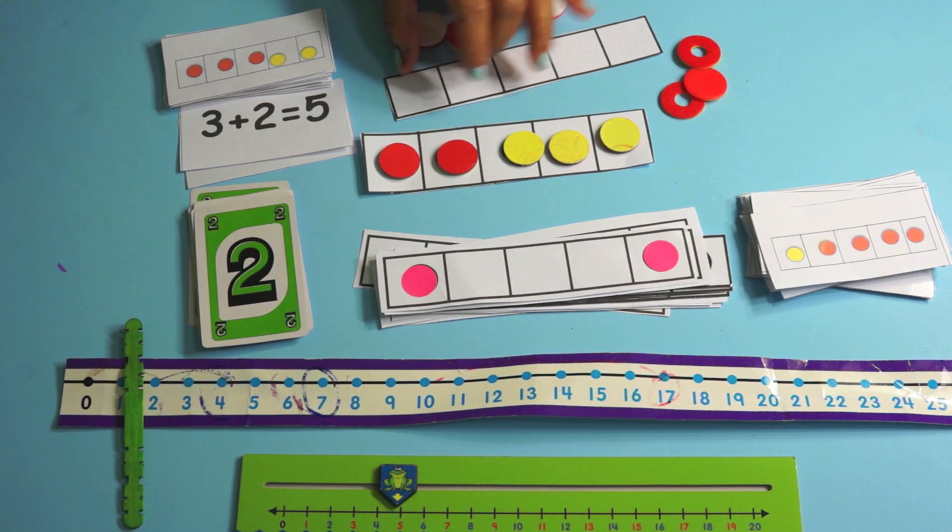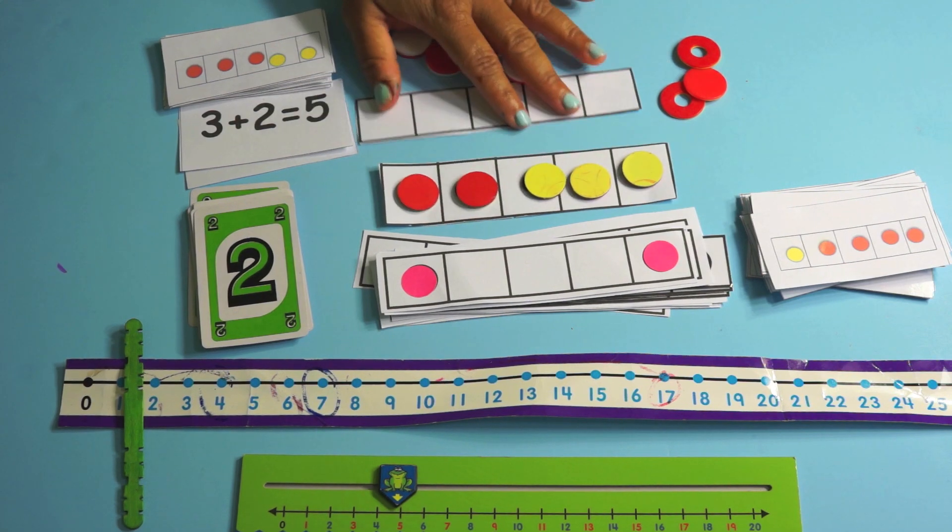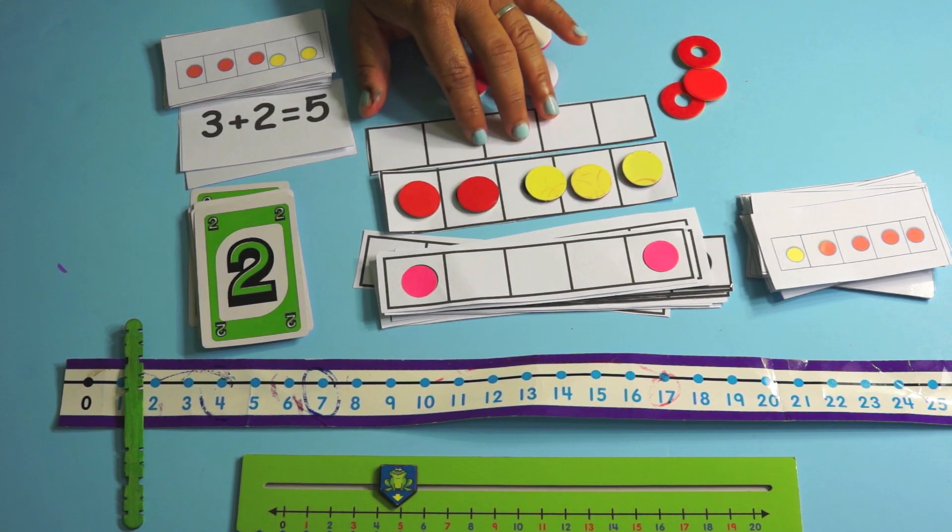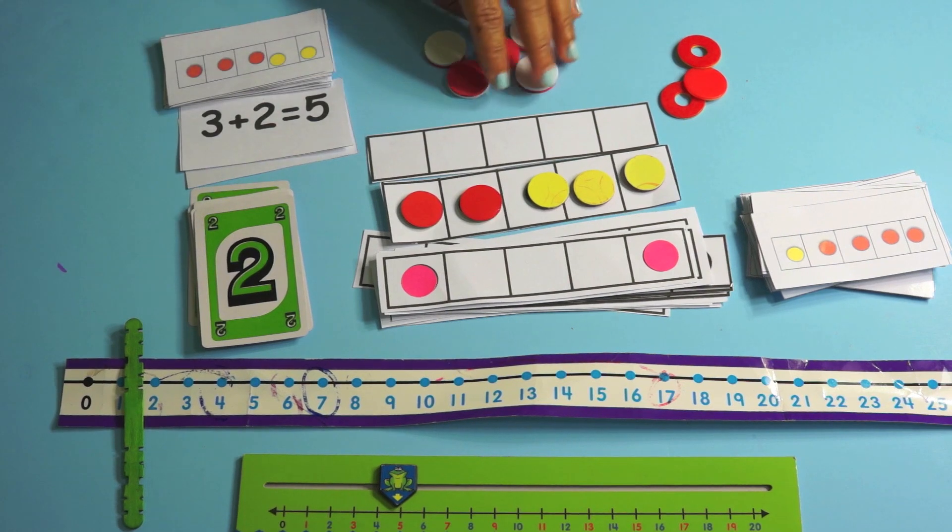Now you're going to have some children who are ready for fluency through ten. They already know their facts through five, but just know that in terms of the grade level fluency is through five.